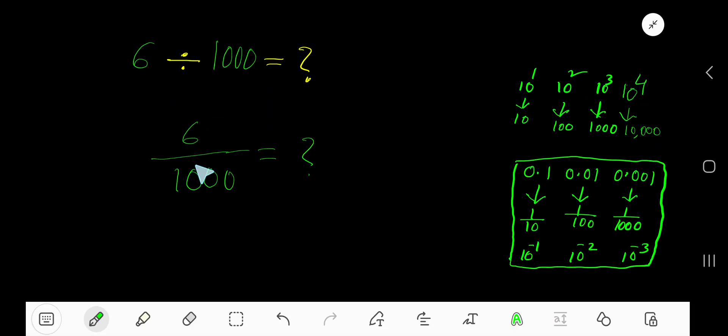6 divided by 1,000. Here 1,000 is a divisor.